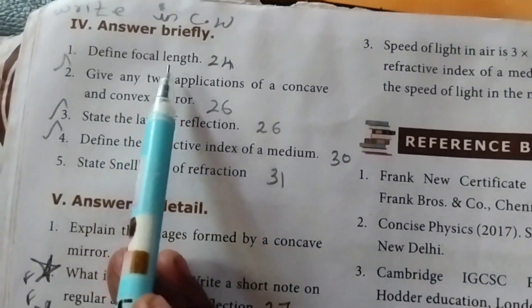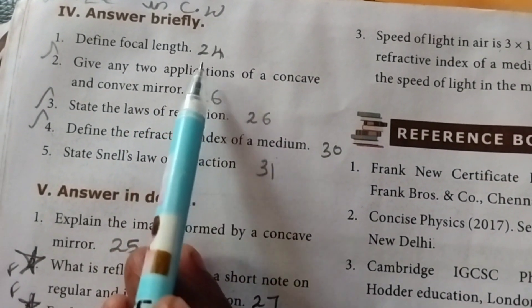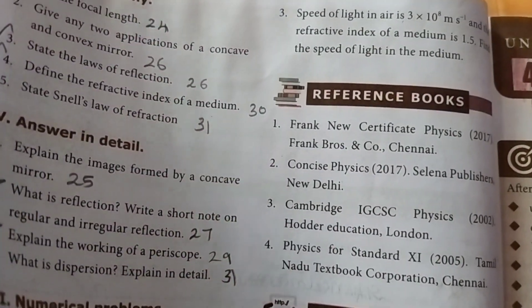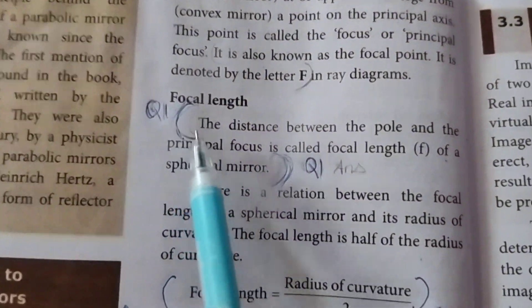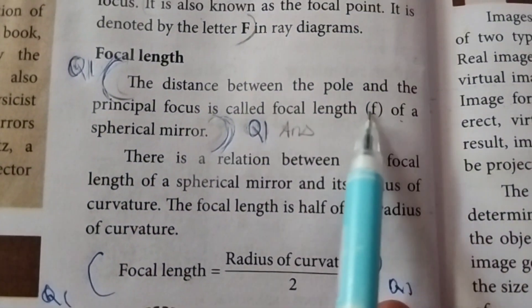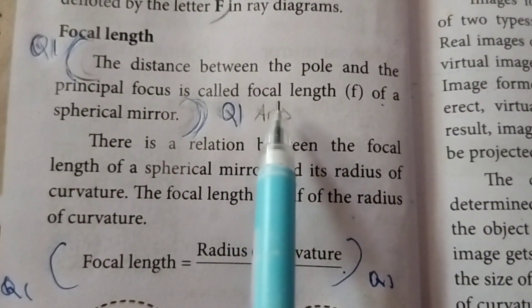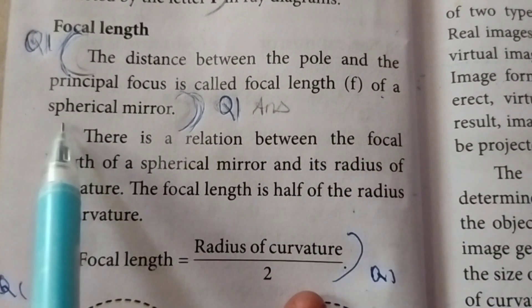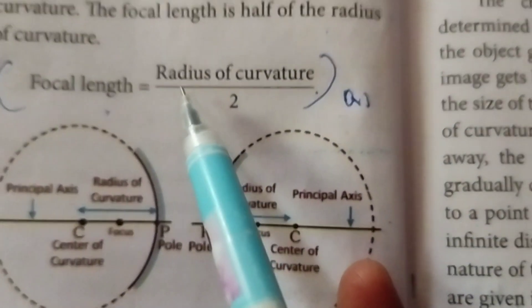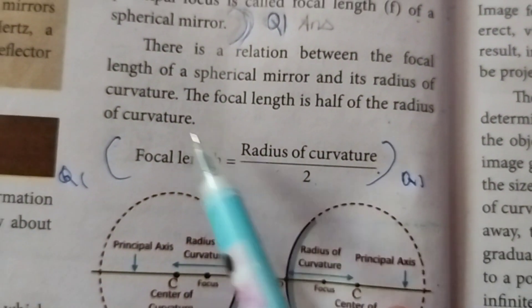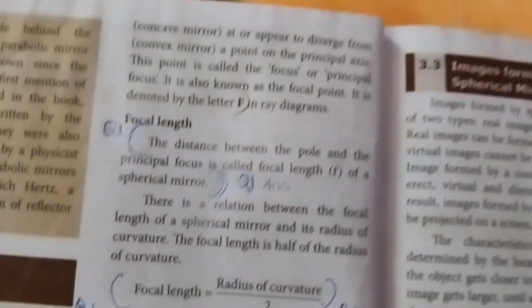Answer in briefly. First one: define focal length. Page number 24. The focal length is the distance between the pole and the principal focus. The formula is focal length equals radius of curvature divided by 2.